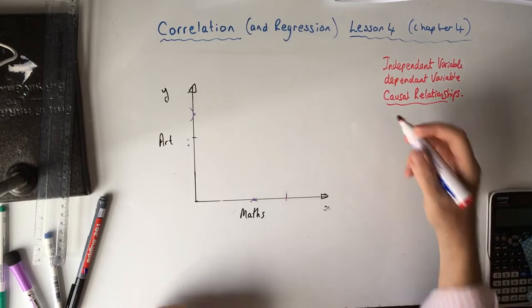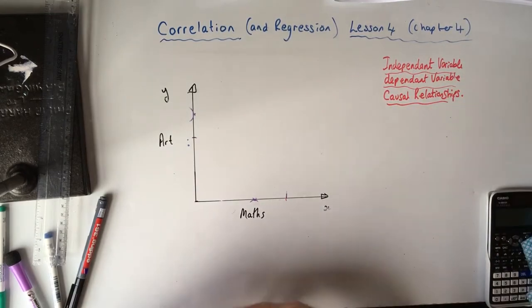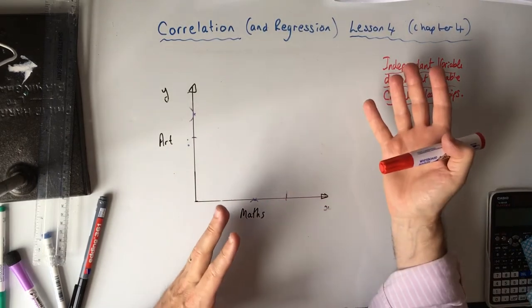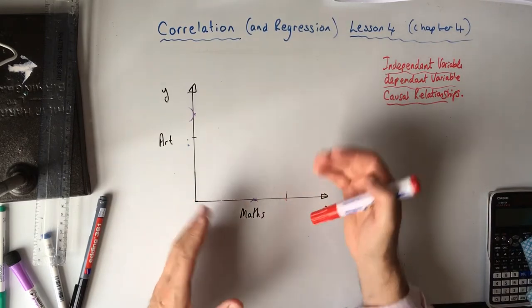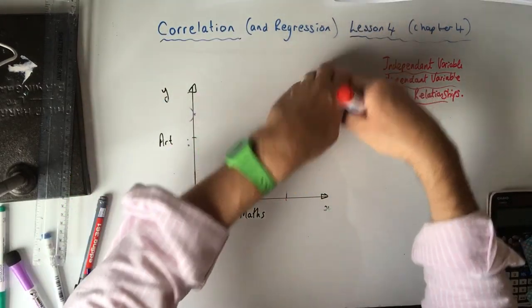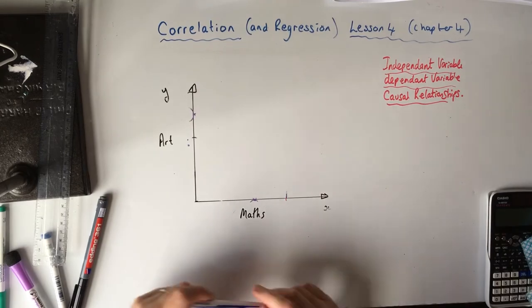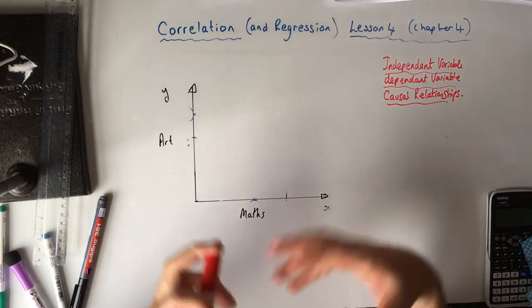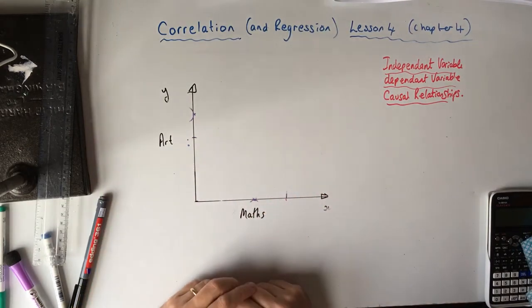You may also get asked to describe the correlation — where you just say 'positive correlation' or 'strong positive correlation.' If you're asked to interpret it, you say 'students who are good at maths tend to be good at art,' or 'students who are good at art tend to be good at maths.' That is interpreting the correlation rather than just stating what it is.